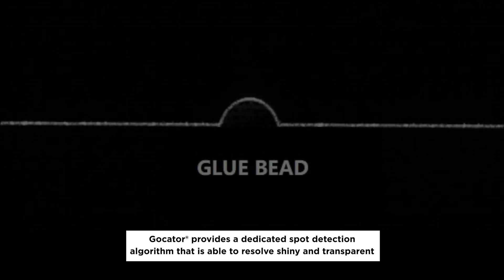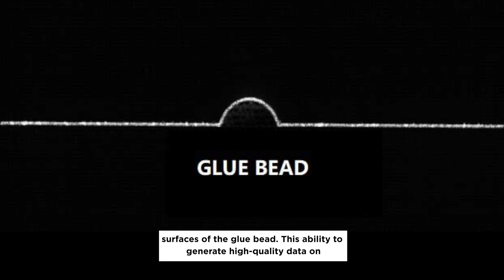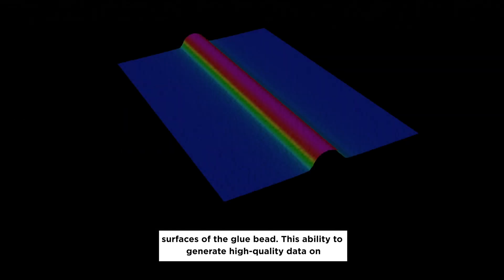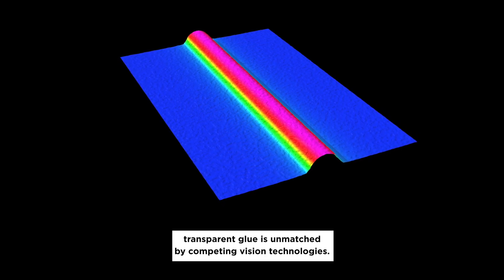Gocator provides a dedicated spot detection algorithm that is able to resolve shiny and transparent surfaces of the glue bead. This ability to generate high-quality data on transparent glue is unmatched by competing vision technologies.